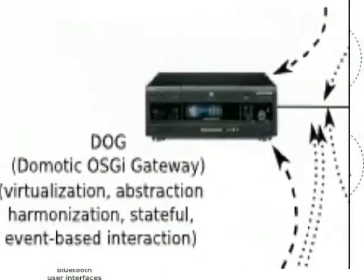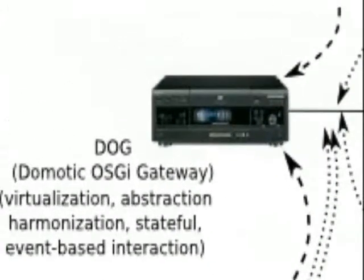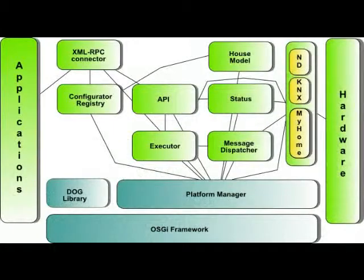The core of the intelligent domotics environment is the DOG gateway. DOG is able, thanks to various network drivers, to talk the native protocol of plants and appliances over wired or wireless IP networks. DOG offers a uniform API interface for developing applications.